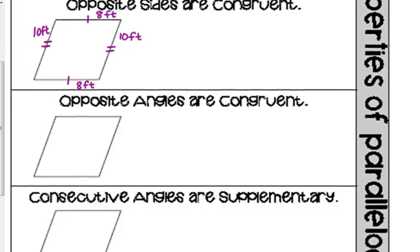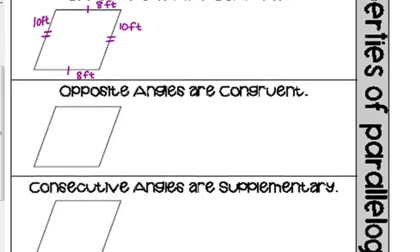Now, in addition to the sides, opposite angles are congruent. So the angles that are opposite from one another, these would be opposite. Top right, bottom left are congruent. And then the top left and the bottom right are congruent.